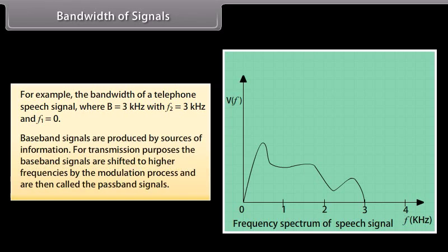Baseband signals are produced by sources of information. For transmission purposes, the baseband signals are shifted to higher frequencies by the modulation process and are then called the passband signals.